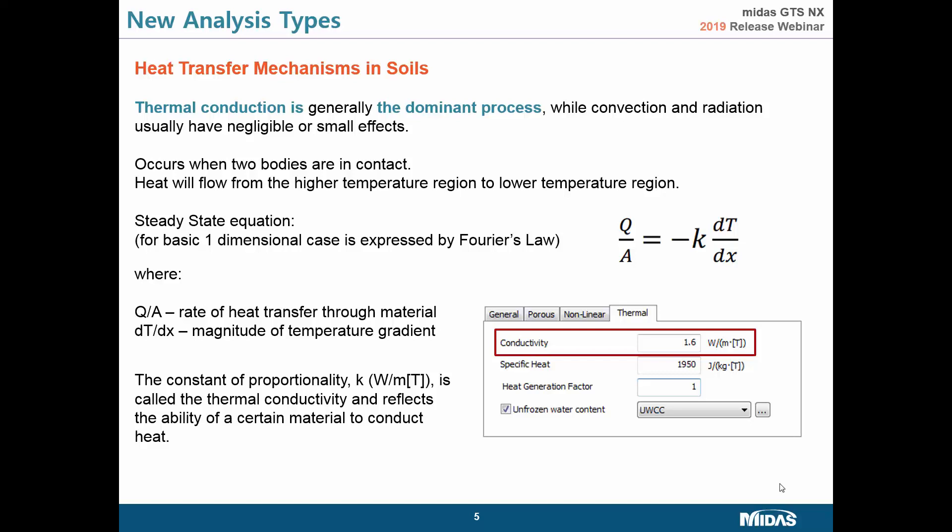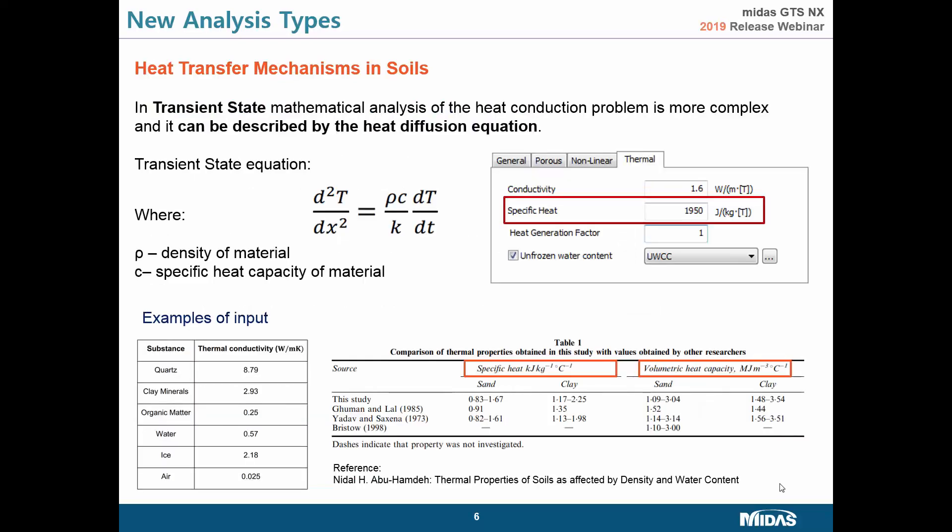You can find the thermal conductivity parameter K under the thermal tab inside the material card. In transient state, mathematical analysis of heat conduction is much more complex, so the equation is different — heat transfer is described by the heat diffusion equation. In this equation, another parameter appears called specific heat capacity of the material.